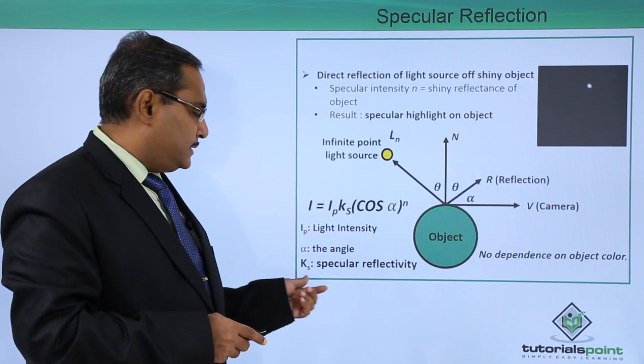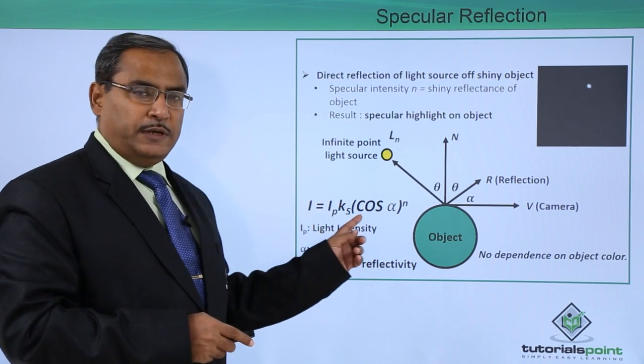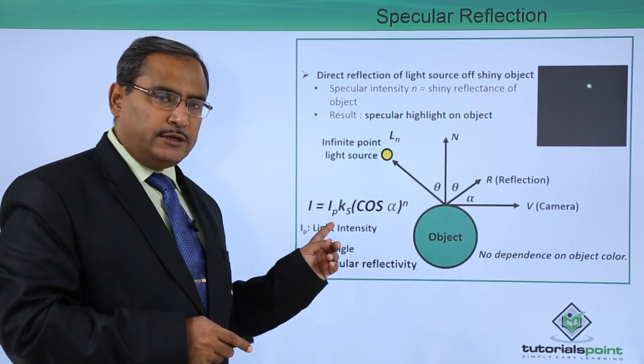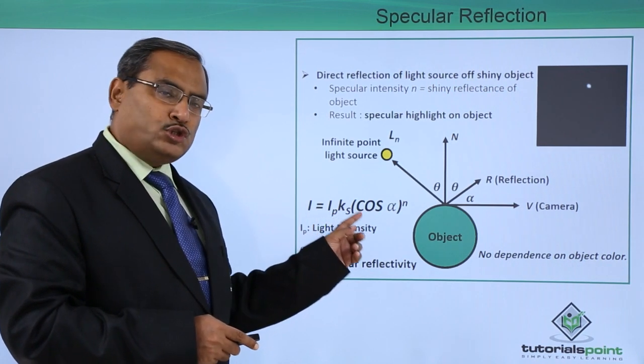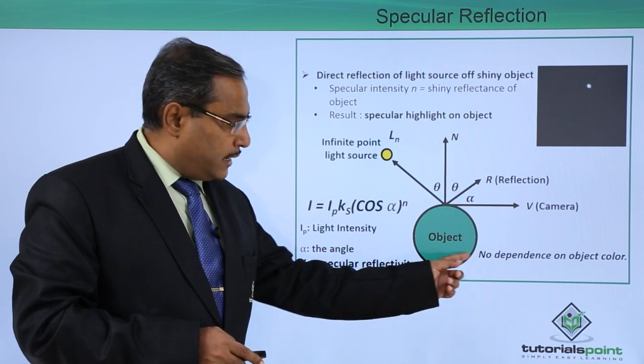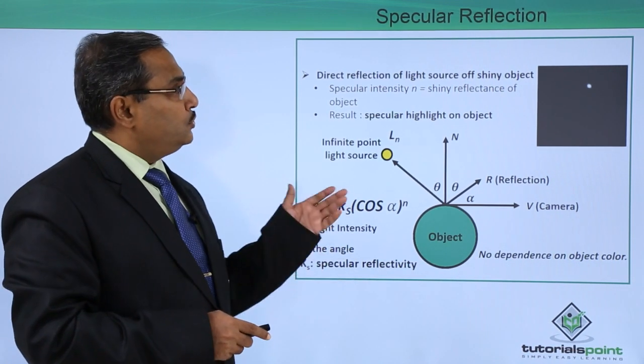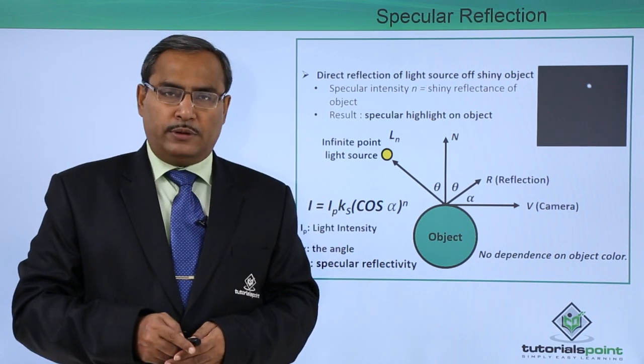And there we are having this k_s that is the specular reflectivity. And this is the respective equation that is I is equal to I_p k_s cos of alpha whole to the power of n. And here it is most important is that there is no dependence on the object color. This is known as our specular reflection.